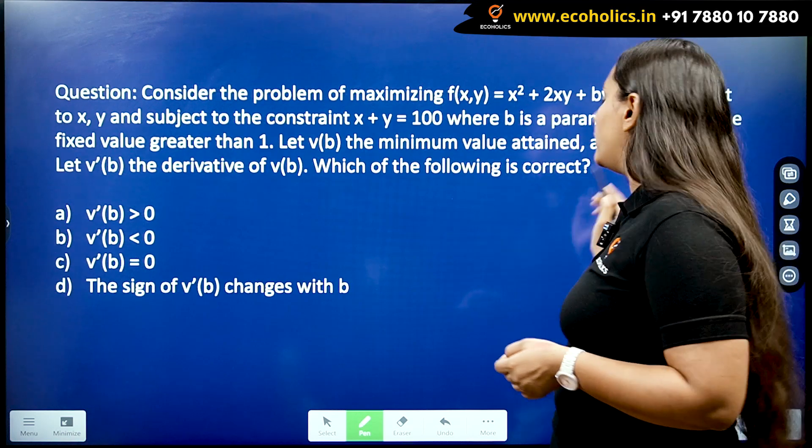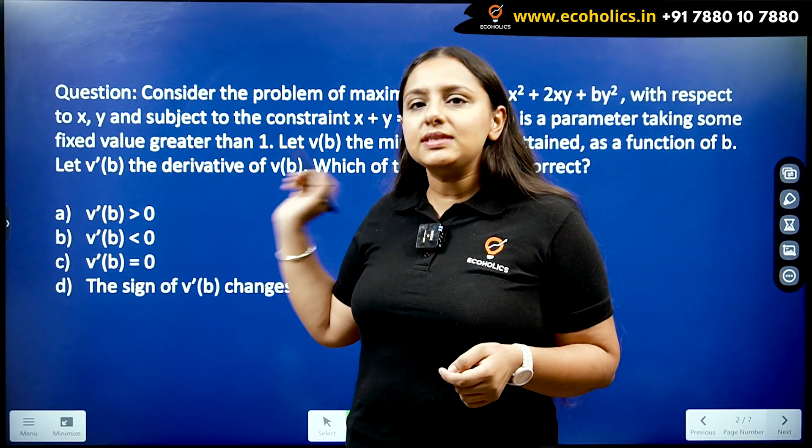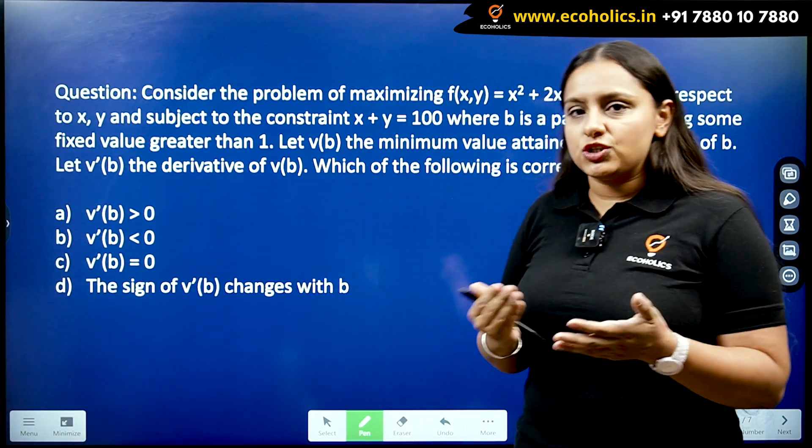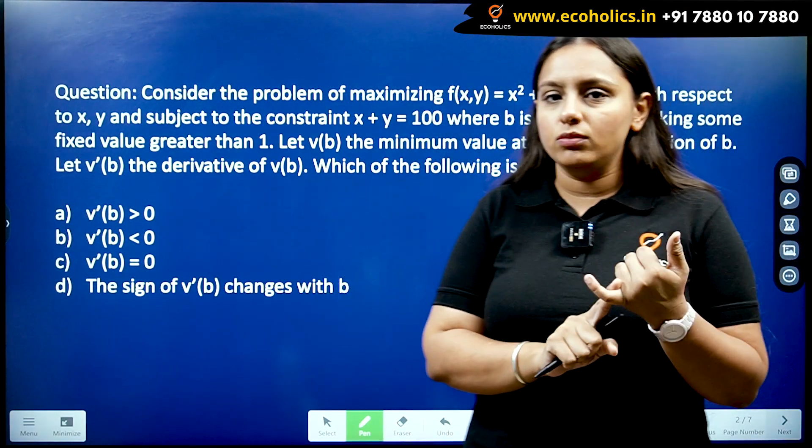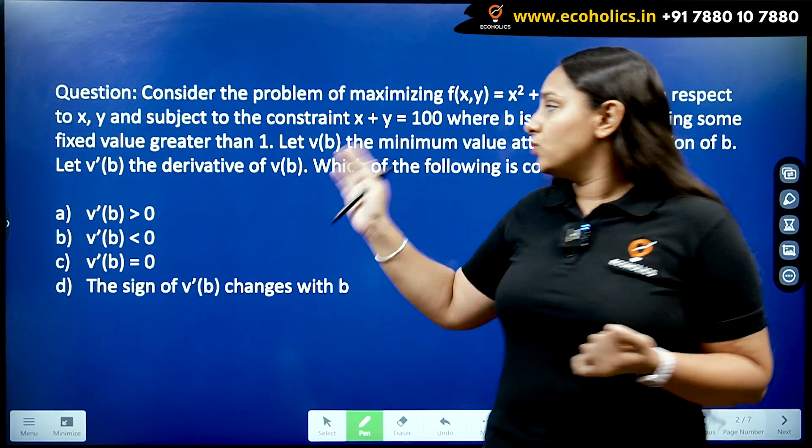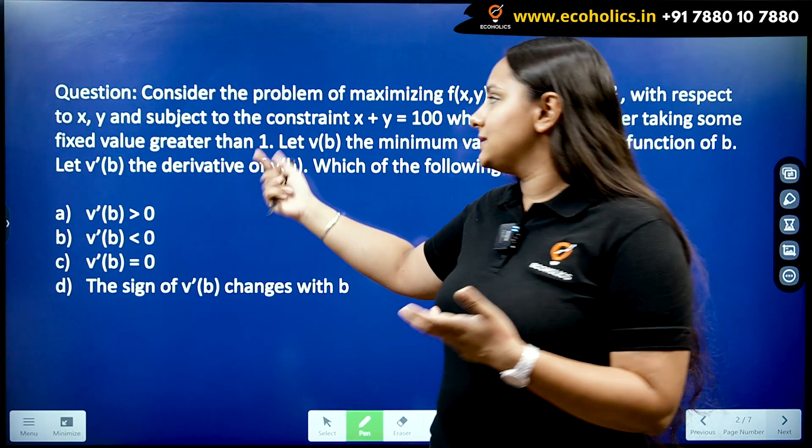Which of the following is correct? As you can see on the screen, we have a question of optimization, but they are not asking you the minimum value directly, they are not asking you the maximum value also. What they are saying is that when you are going to minimize this thing, the minimized thing you are going to call it v(b), and you have to tell the derivative of that v(b).